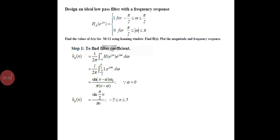Now let us see the problem: design a low pass filter with the given frequency response. Find the value for h(n) for m=11 using the hanning window, and plot the magnitude and phase spectrum.